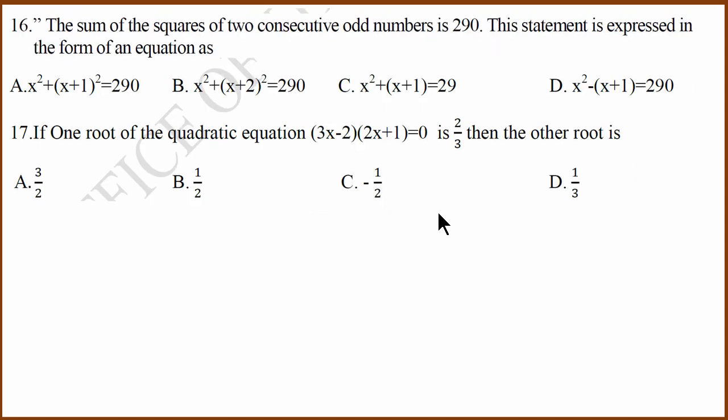16th question. The sum of squares of two consecutive odd numbers. Two consecutive odd numbers are x and x plus 2. Sum of squares are x square plus x plus 2 whole square and that equals 290. We write it as x square plus (x plus 2) whole square equals 290.